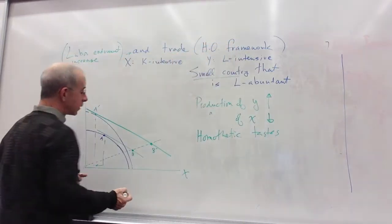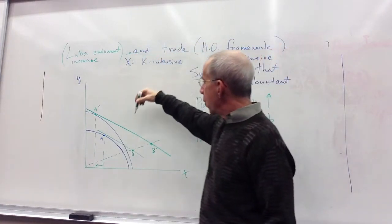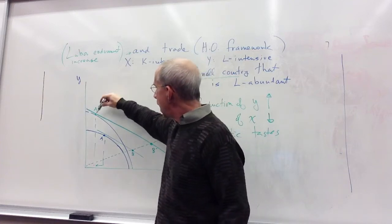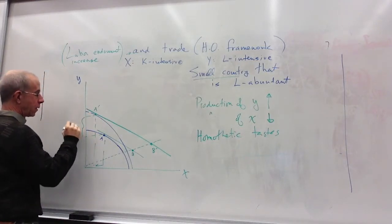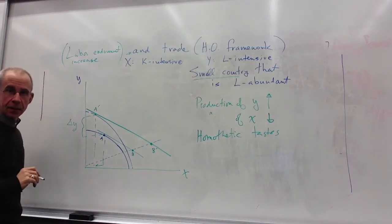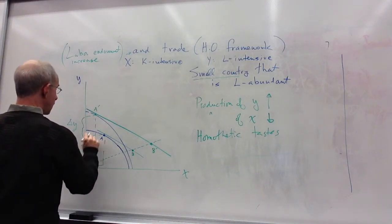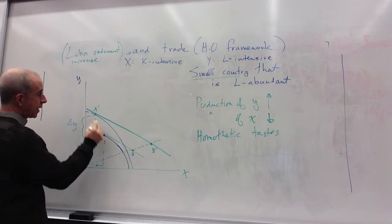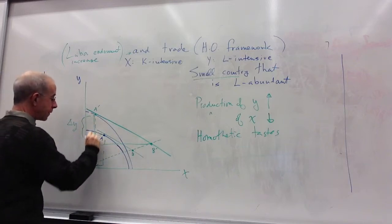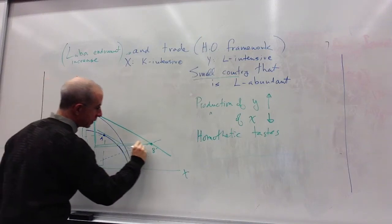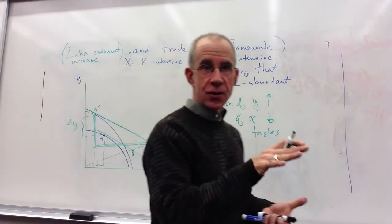So let's take a look at what happens to the amount of trade. Prices are remaining unchanged. We're producing a lot more Y. So you've got an increase in the amount of Y that's being produced, and the amount of trade that occurs is given by this triangle. That's the amount of exports. This is the amount of imports. And so what you see is that there is a general expansion in the amount of trade.